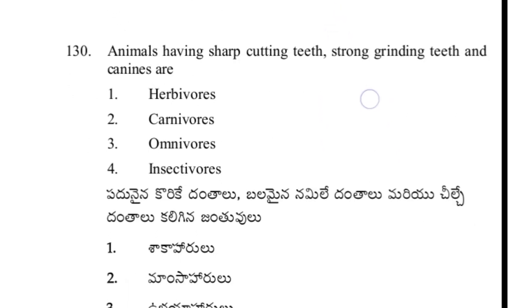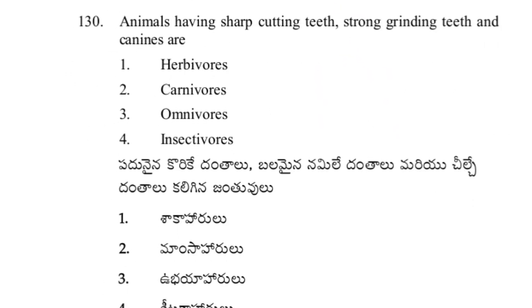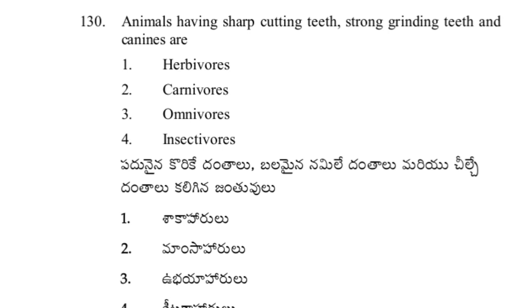An animal having sharp cutting teeth, strong grinding teeth, and canines is option 3 — omnivore.